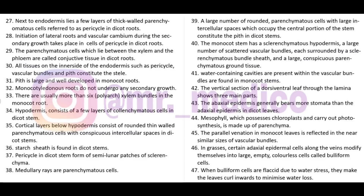Hypodermis consists of a few layers of collenchymatous cells in dicot stem - remember DC for dicot + collenchyma. In monocot stem, hypodermis is sclerenchymatous. The cortical layers below the hypodermis consist of round, thin-walled parenchymatous cells with conspicuous intercellular spaces in dicot stem.